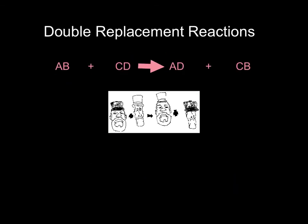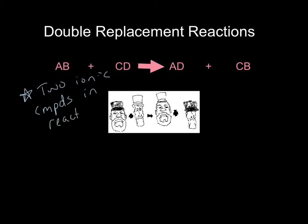The next type is a double replacement reaction. In a double replacement reaction, compound AB reacts with another compound to produce two different compounds. The key for kids: for a double replacement reaction, we have two ionic compounds in the reactants, and we'll also have two compounds in the products.